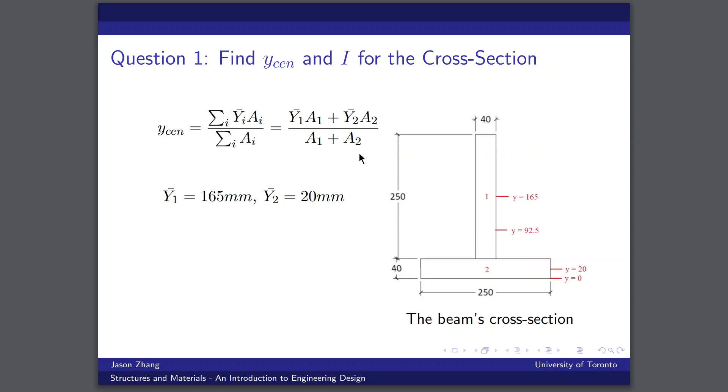So I've labeled these as y bar one and y bar two. And furthermore, to find the centroid, we need the areas of the rectangles. Since we're given the dimensions, they're quite easy to find, just 40 millimeters by 250 millimeters. Doing the calculation, we find that the centroidal axis of the whole cross-section is at 92.5 millimeters above the bottom face.